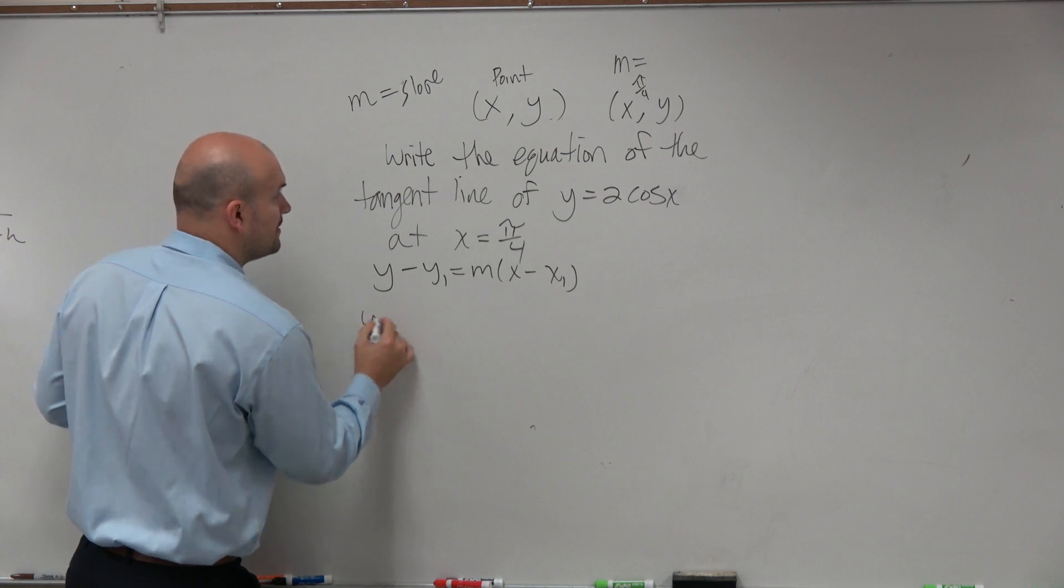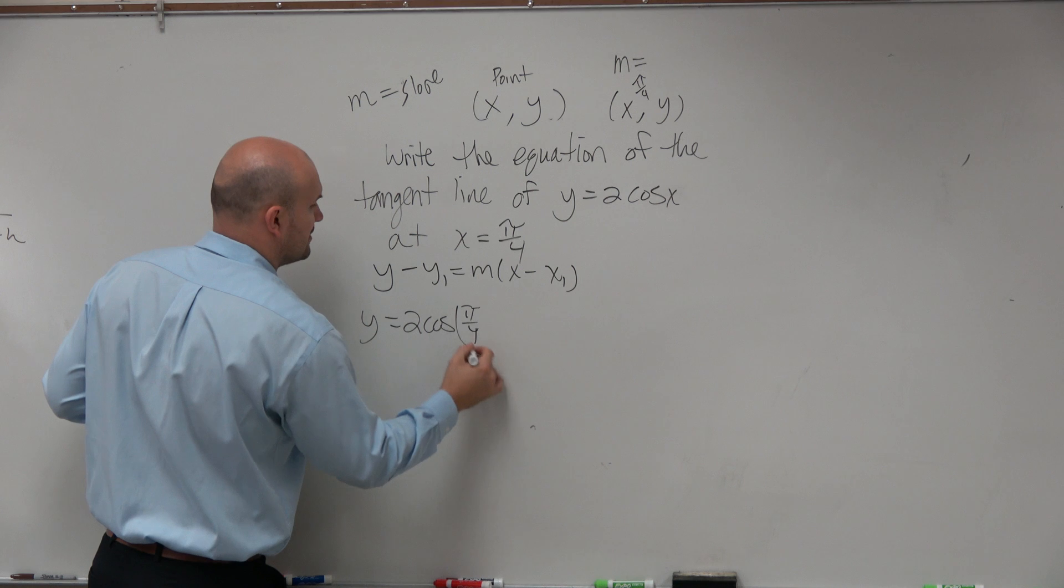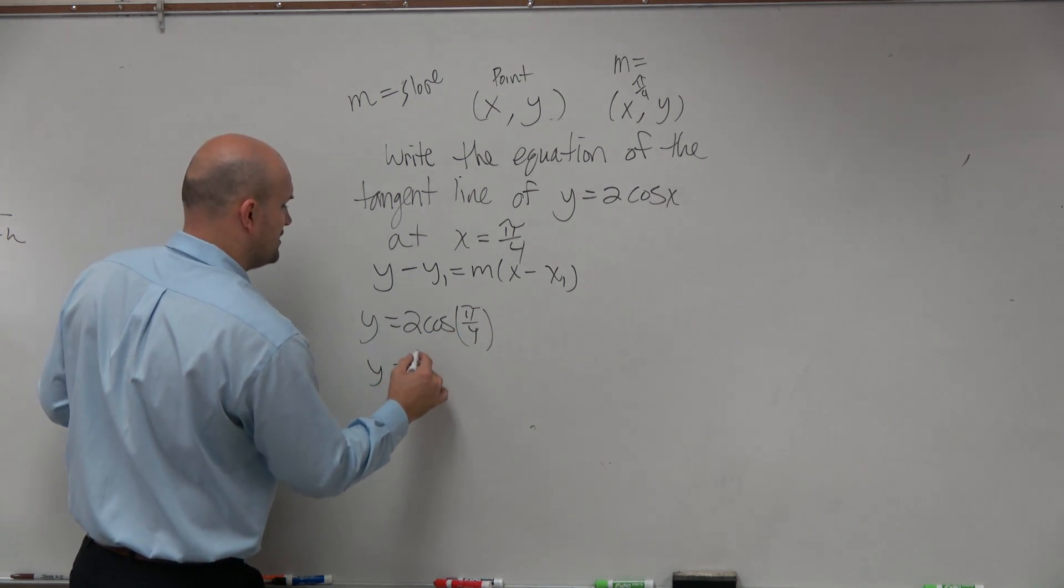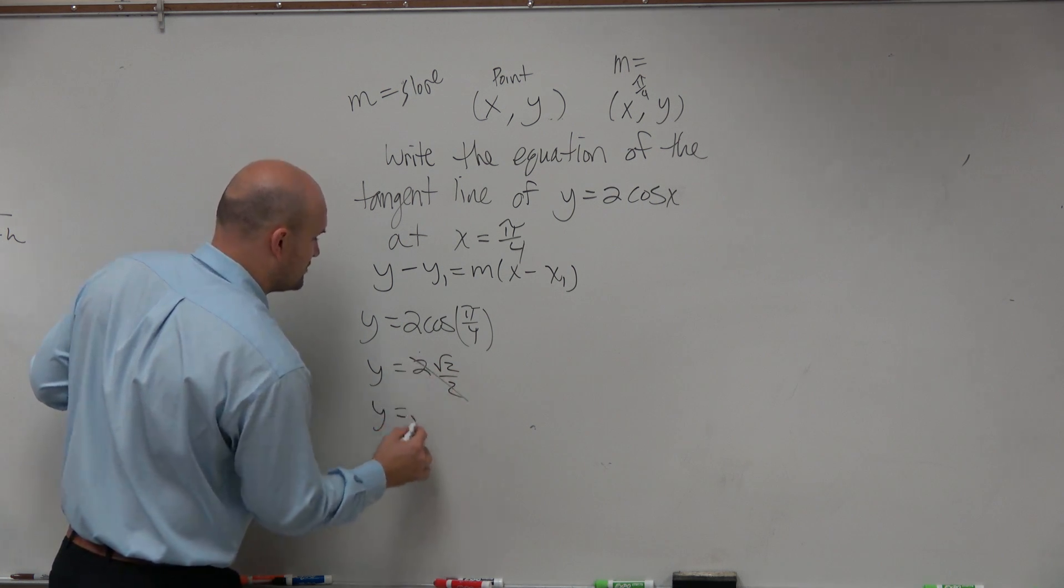Let's take y equals 2 times the cosine of pi over 4. Knowing the unit circle, pi over 4 is going to be square root of 2 over 2, so y equals 2 times the square root of 2 over 2. y equals the square root of 2.